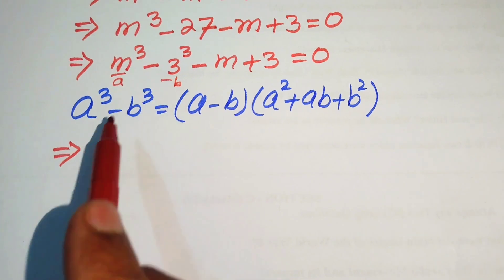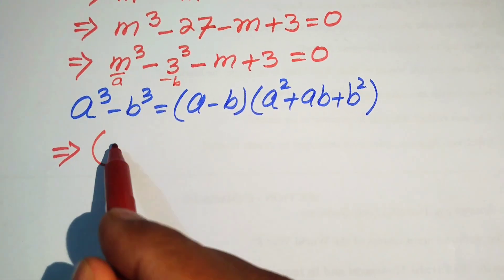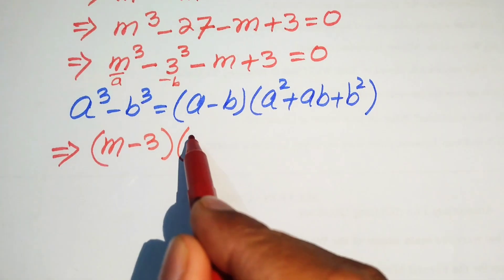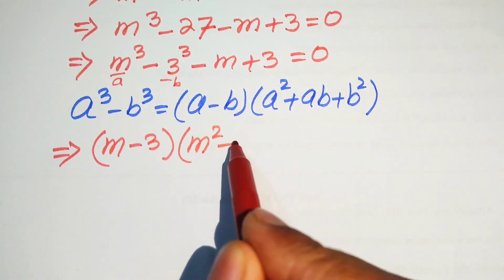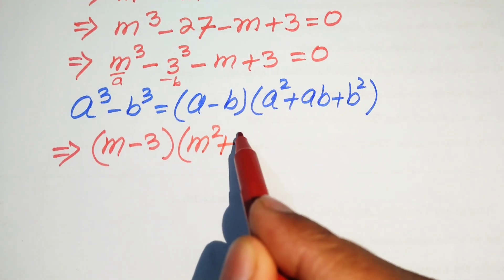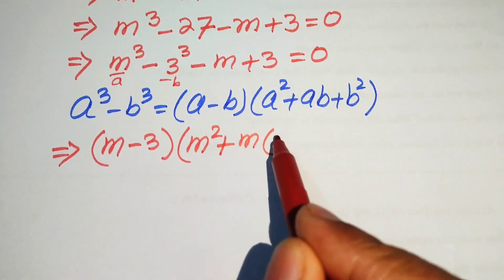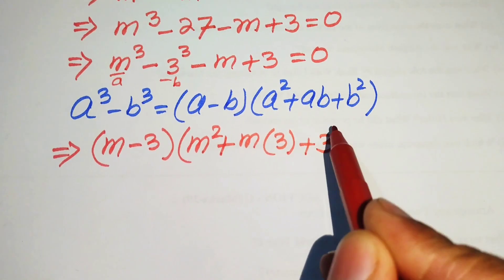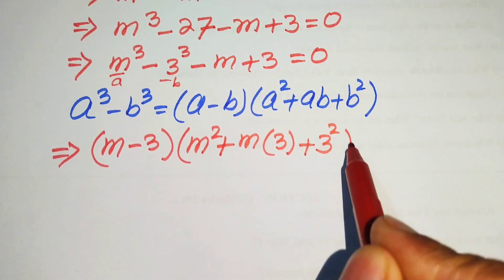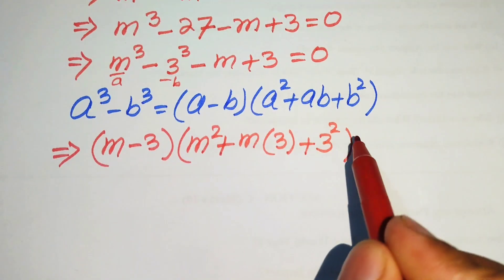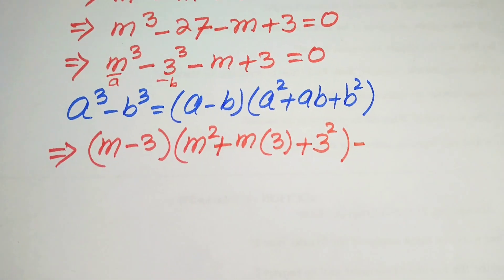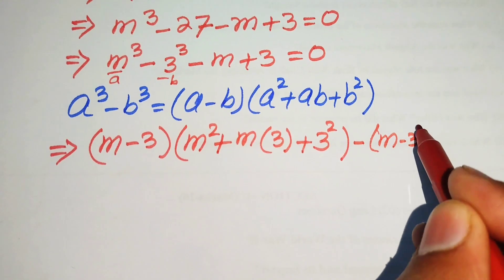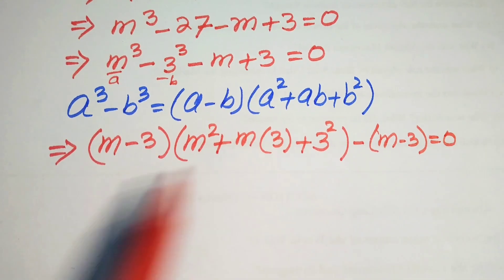When we apply this formula, the above equation is written as (m minus 3) into (m squared plus ab — where a is m and b is 3 — plus b squared, so 3 squared). Then we take common minus from both remaining terms, giving m minus 3 equals to 0.